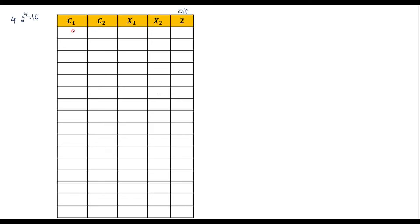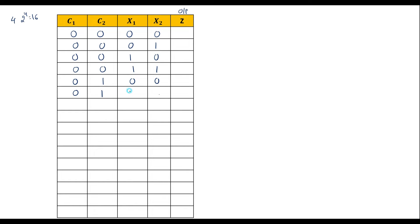The input combinations run from decimal 0 to 15: 0000 (0), 0001 (1), 0010 (2), 0011 (3), 0100 (4), 0101 (5), 0110 (6), 0111 (7), 1000 (8), 1001 (9), 1010 (10), 1011 (11), 1100 (12), 1101 (13), 1110 (14), 1111 (15).